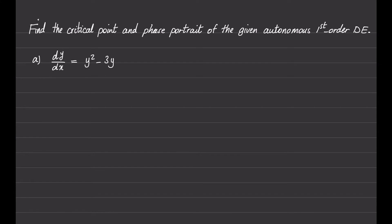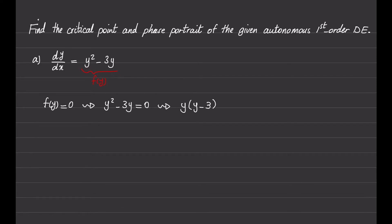We call the right hand side of this differential equation f(y), and we need to find the roots of the right hand side. We can factor out y and find that the roots are y equals 0 and y equals 3.